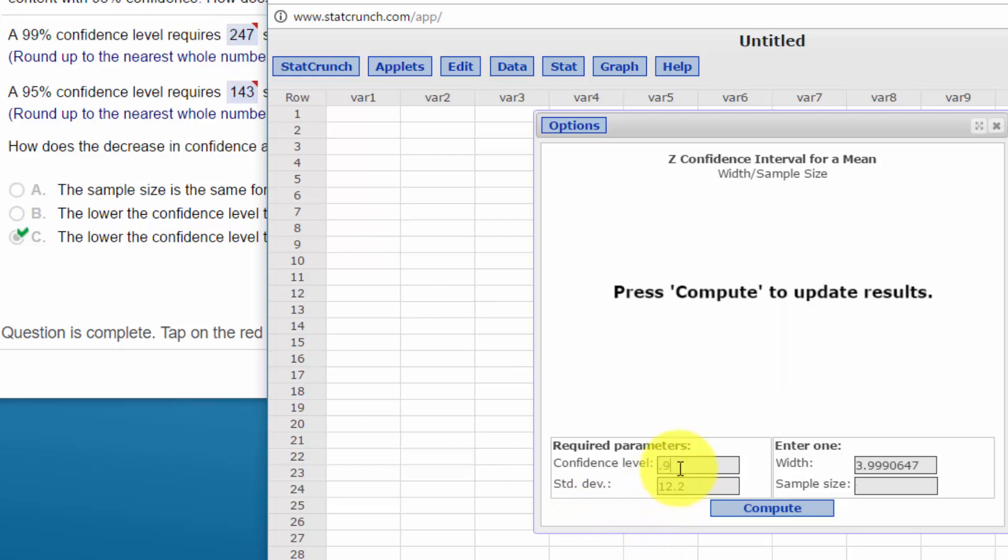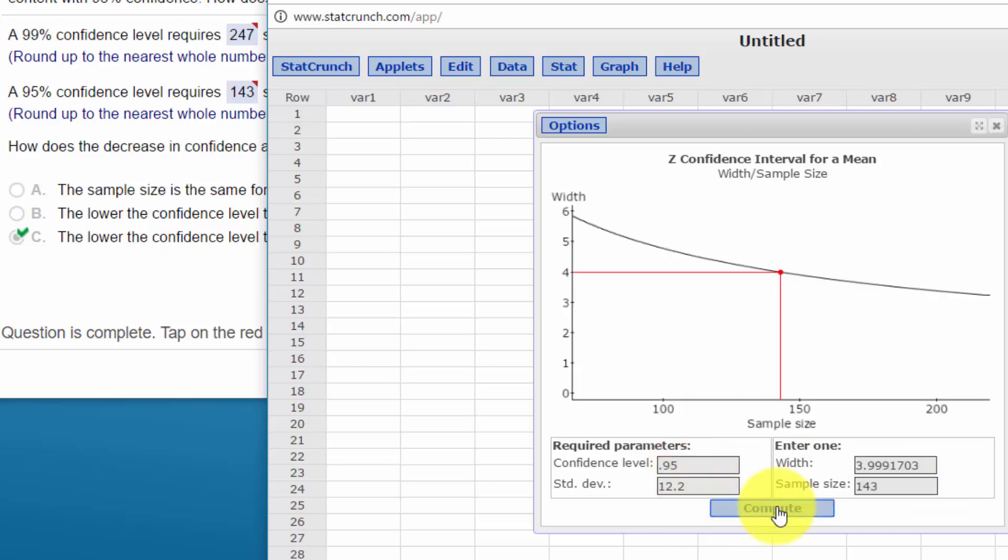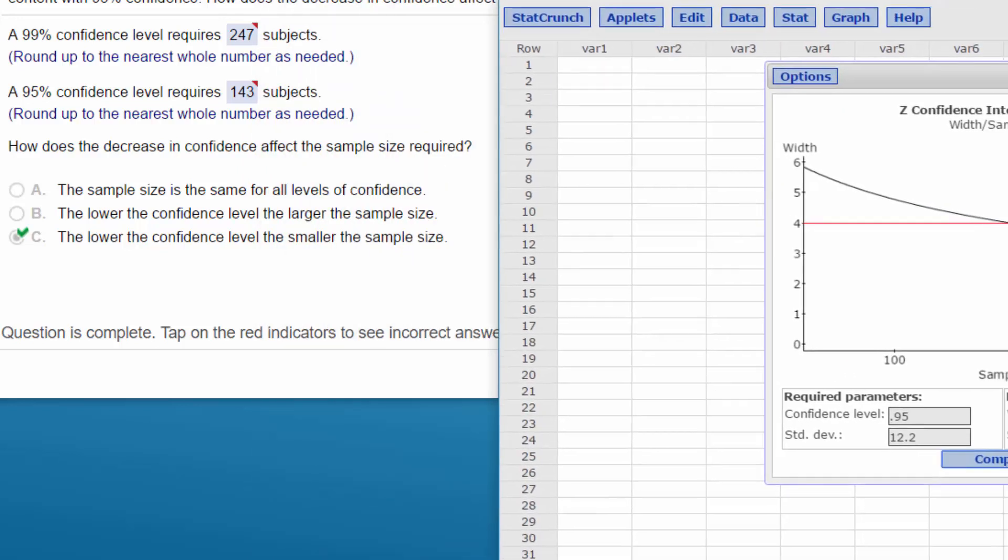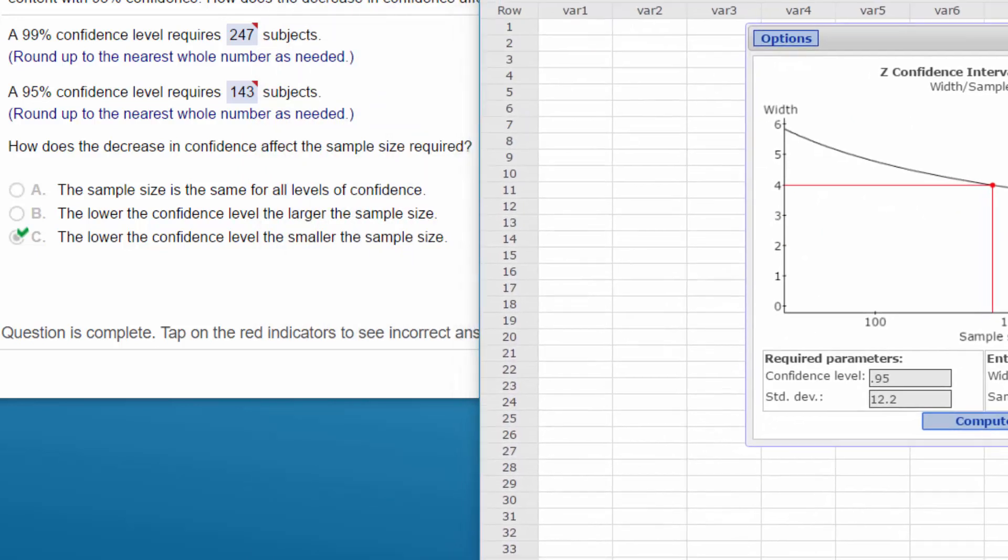To get to the 95%, we just change one value. And for some reason, we got to go back, but that is four, leave everything else the same. We compute, and we get 143 for the 95% confidence interval. So the last question there is, how does the decrease in confidence affect the sample size?